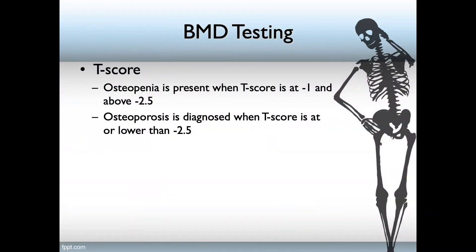We look for something called a T-score. Osteopenia is present when the T-score is at negative 1 and above negative 2.5. However, osteoporosis is diagnosed when the T-score is at or lower than negative 2.5. Remember, we're measuring bone density — the lower the number, the less dense the bone is.